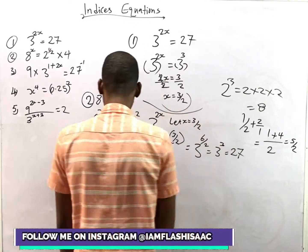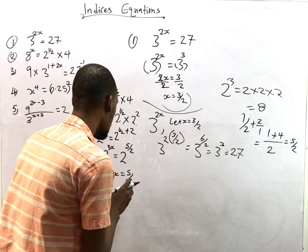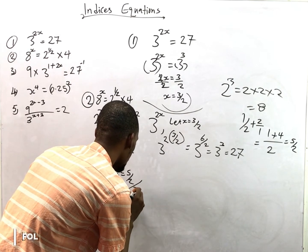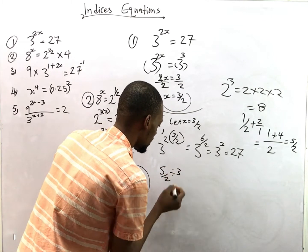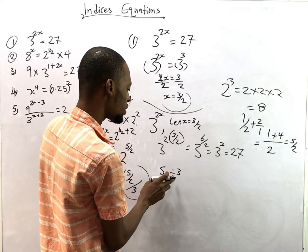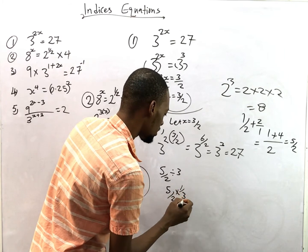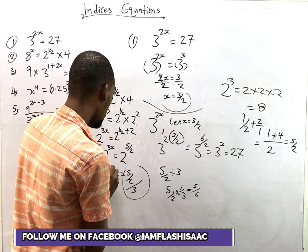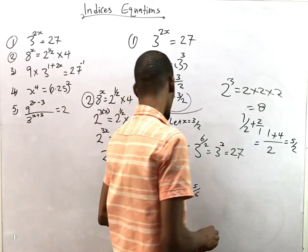Since the bases are the same we equate the powers: 3s = 5/2. Dividing both sides by 3: s = 5/2 ÷ 3 = 5/2 × 1/3 = 5/6. Therefore s = 5/6. If you are confused, go through the laws of indices again — I'll share the link.